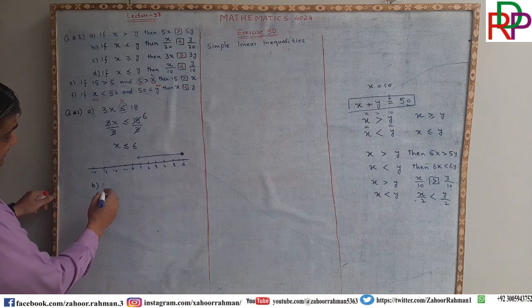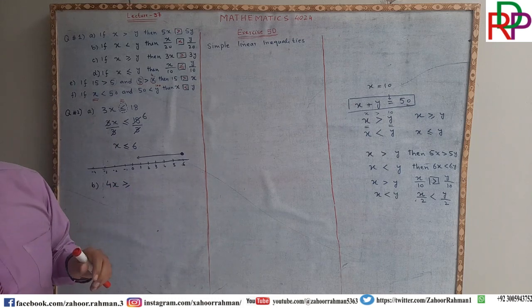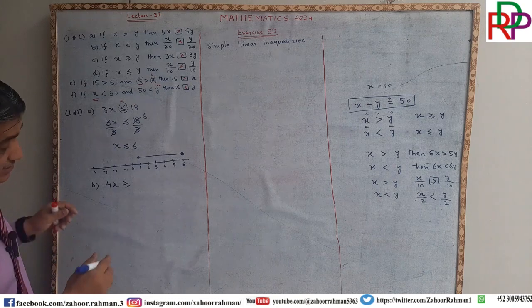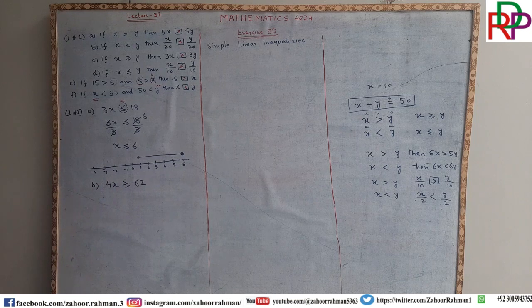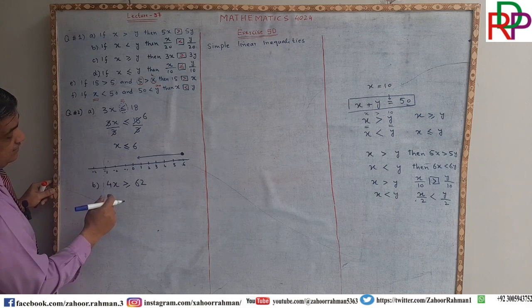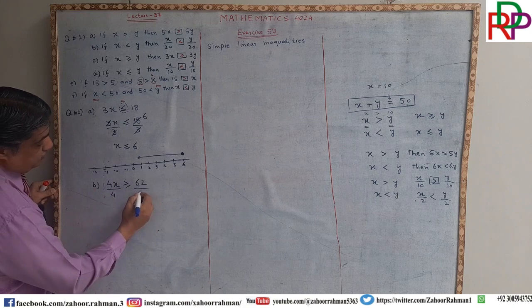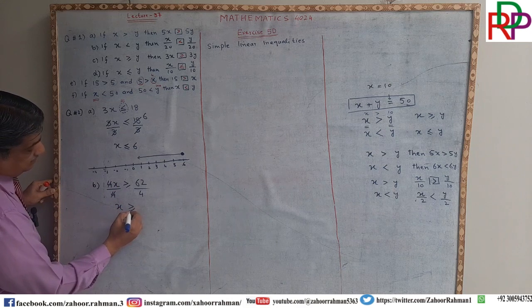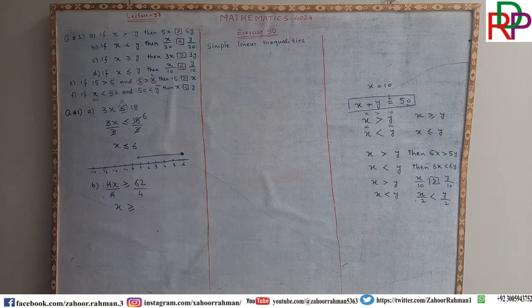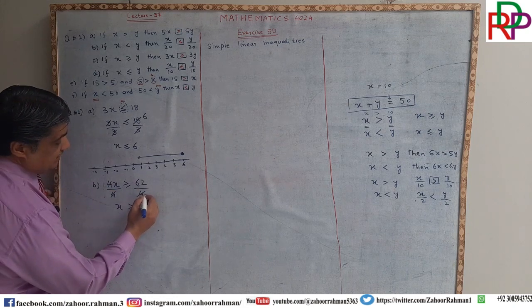For part B: 4x is greater than or equal to 62. Again, treat the inequality sign like an equal symbol and solve. We divide both sides by 4 to remove the 4. Because we are dividing by a positive number, the inequality sign will not change.